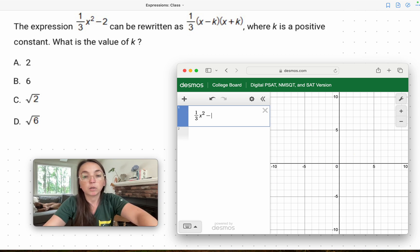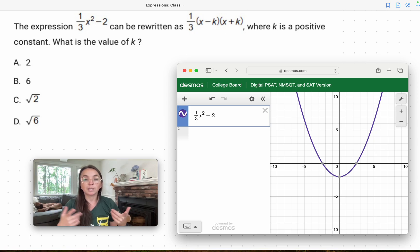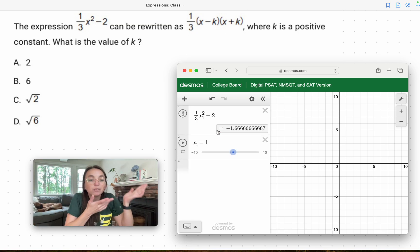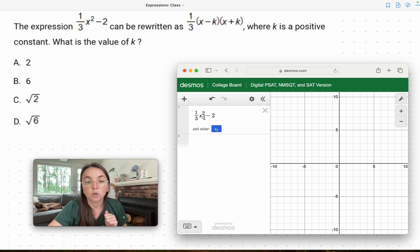One of the things about Desmos is if we are using a variable that's part of the coordinate plane, it's going to try to graph it. We don't want the graph. We actually just want the calculator. So we're going to do an x sub 1. We're telling Desmos, hey, we don't want to graph that. We're just using x because that's what we have to do.